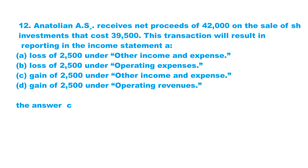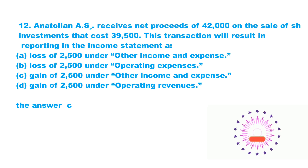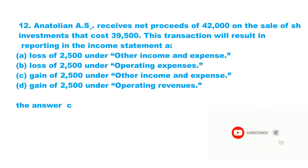Question 12. Anatolian A.S. receives net proceeds of £42,000 on the sale of share investments that cost £39,500. This transaction will result in reporting in the income statement: A. A loss of £2,500 under other income and expense. B. A loss of £2,500 under operating expenses. C. A gain of £2,500 under other income and expense. D. A gain of £2,500 under operating revenues. The answer is choice C.